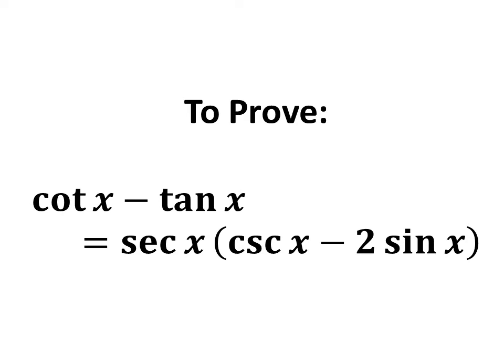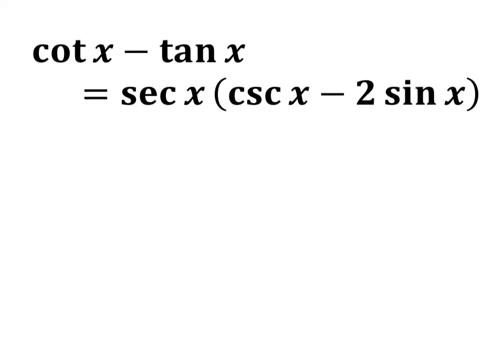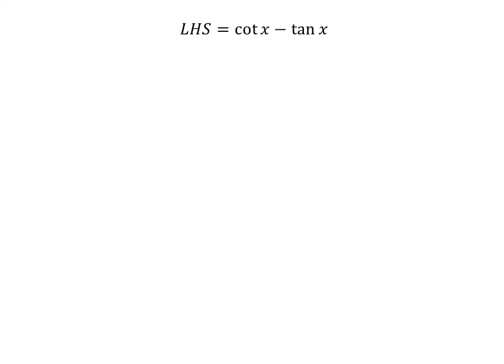In this video, we will learn to verify the trigonometric identity: cotangent of x minus tangent of x is equal to secant of x times cosecant of x minus 2 times sine of x. Let us start from the left hand side of the identity. The left hand side of the identity is equal to cotangent of x minus tangent of x.